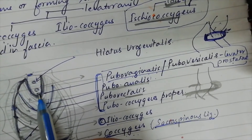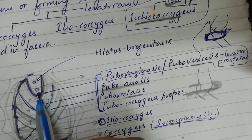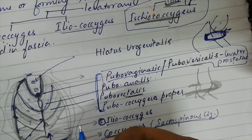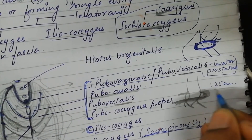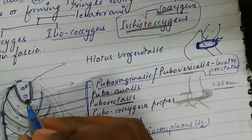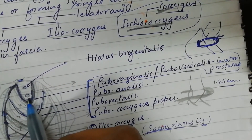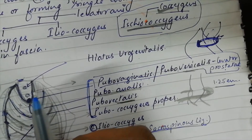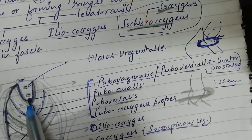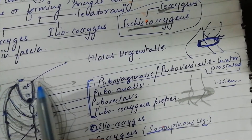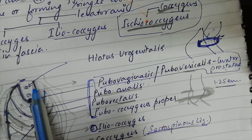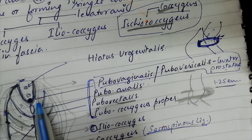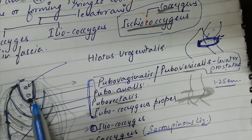The perineal body is located approximately 1.25 cm anterior to the anterior anal margin. The perineal body receives the insertion of the anterior-most fibers of Pubococcygeus — that is, the levator prostaticus and pubovaginalis portions.